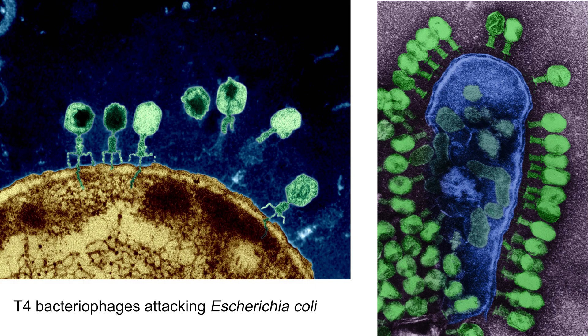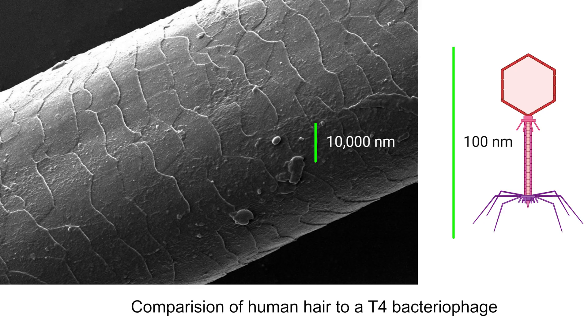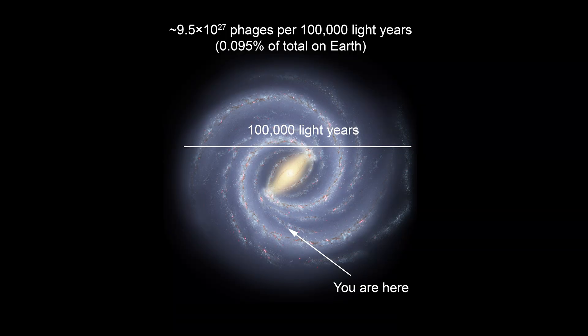Viruses are just about everywhere on Earth, and most of them infect bacteria. These are called bacteriophages, or phages for short, and there are an estimated 10 to the power of 31 phages on Earth — that's 10 nonillion of them. A typical phage particle is roughly 100 nanometers in diameter, that's 1/1,000th the thickness of a sheet of paper. All 10 nonillion phages on Earth laid end to end would be 100 million light years long — 40 times the distance to the nearest galaxy, Andromeda.